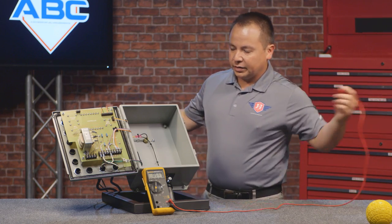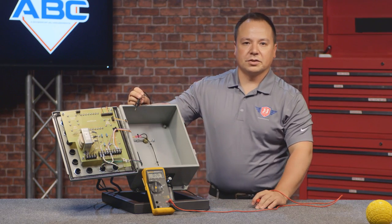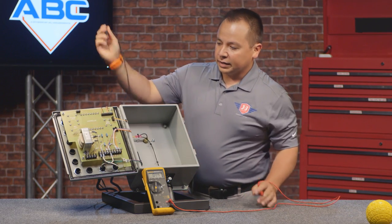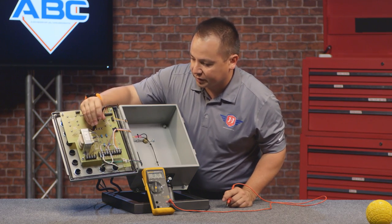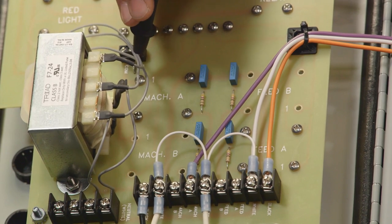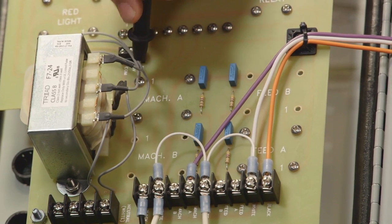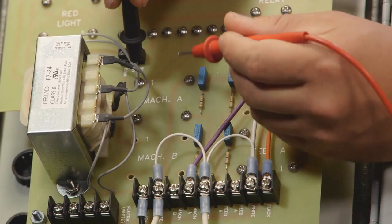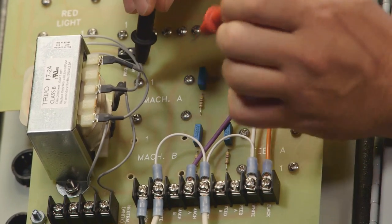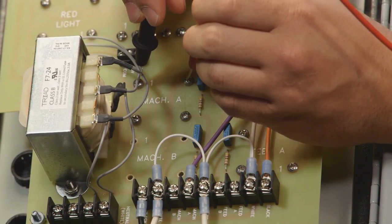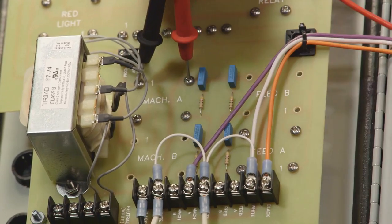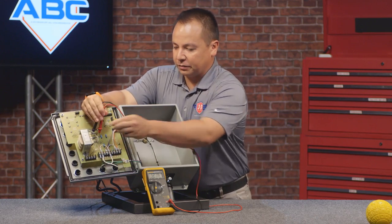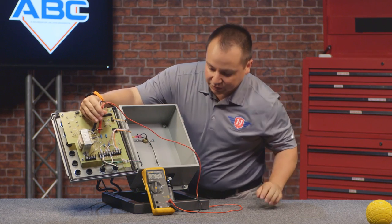Now to test this relay, the first thing we're going to check for is to make sure that it is getting power. The number one on the circuit board always denotes the ground position for a relay. We're going to touch one test lead here and the other one to the upper right position. It should read around 115 volts plus or minus five or so.